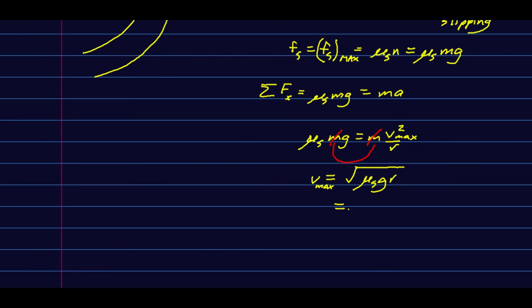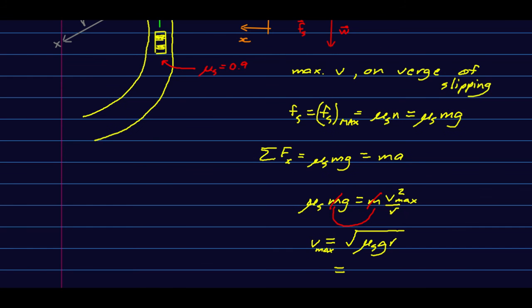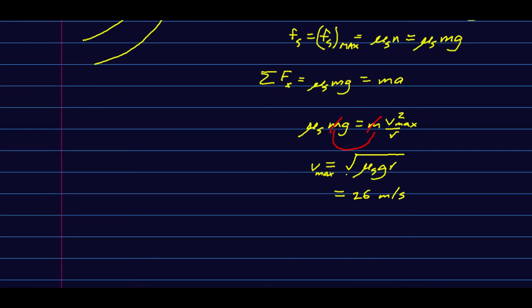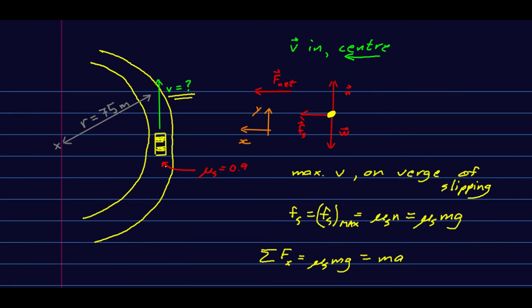If you plug into your calculator with the μ_s I've quoted here and that radius, it comes out as about 26 meters per second. So you wouldn't want to put a curve this tight on a major highway where the speed limit is more like 30 or 35 meters per second. This is a sort of consideration that goes into road design.